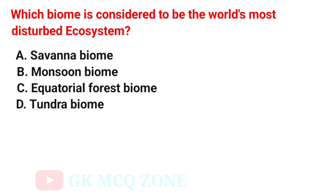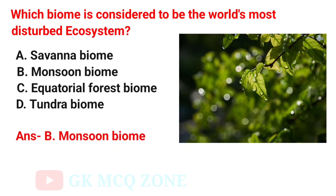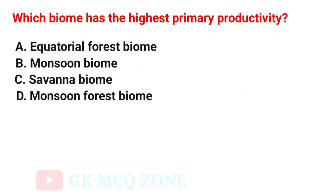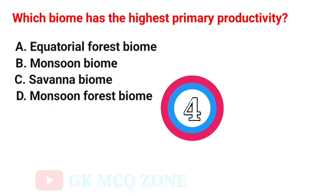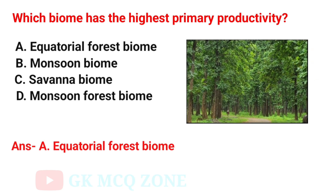Which biome is considered to be the world's most disturbed ecosystem? The correct answer is Option B: Monsoon Biome. Which biome has the highest primary productivity? The correct answer is Option A: Equatorial Forest Biome.